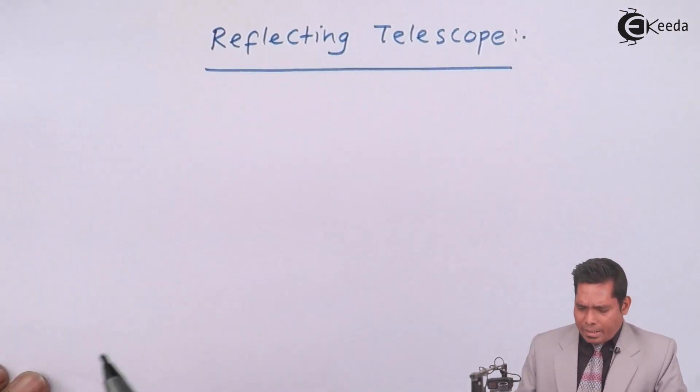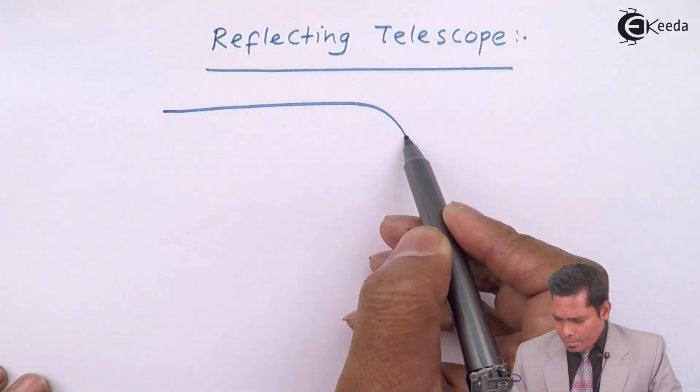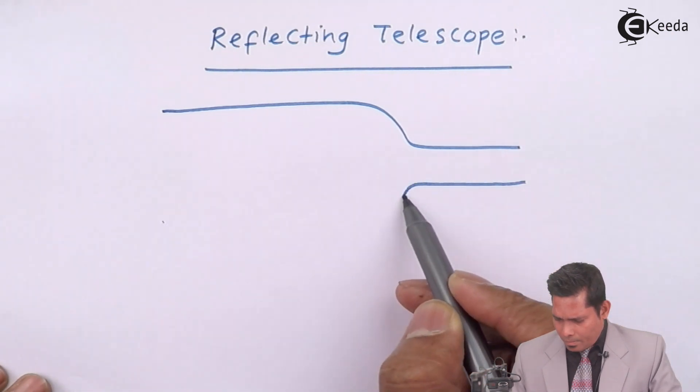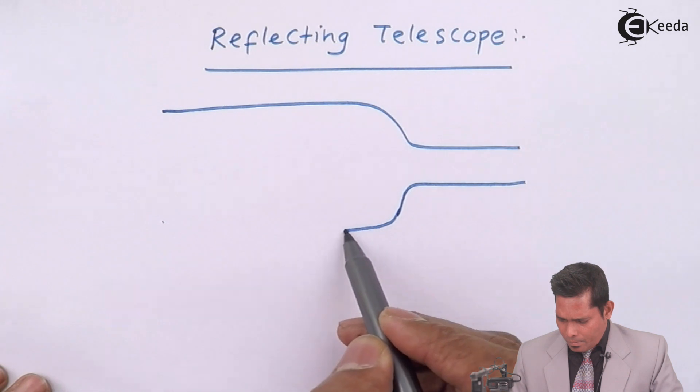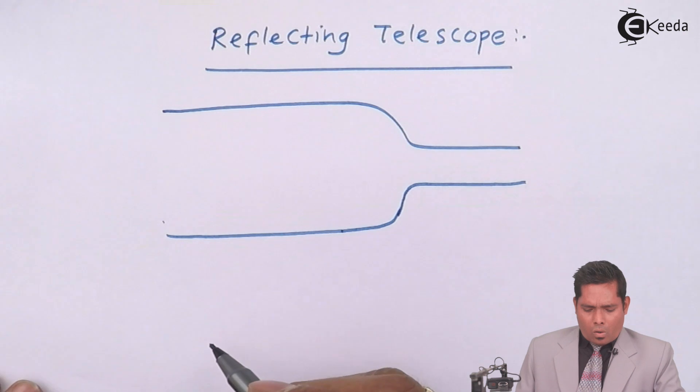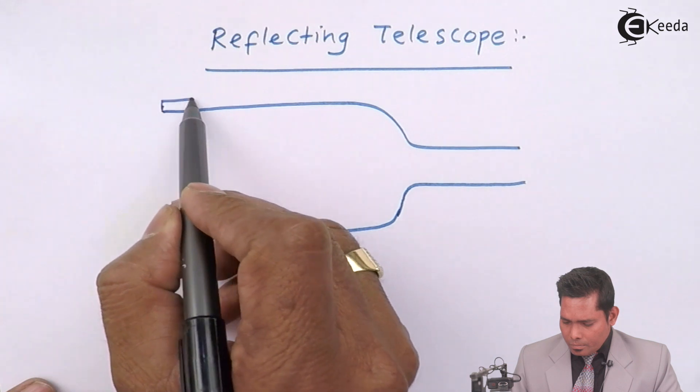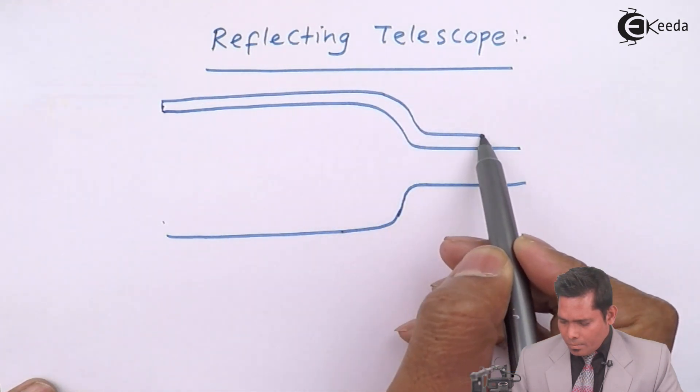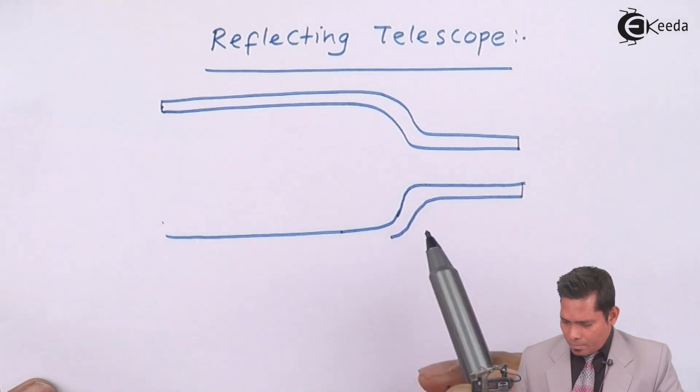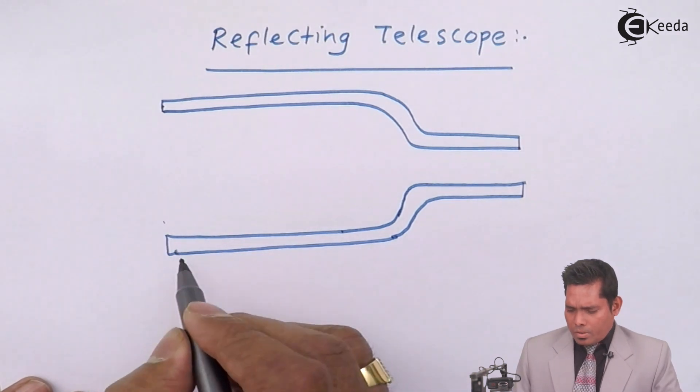So here, the basic diagram is that this one is the objective mirror. This is an objective mirror.